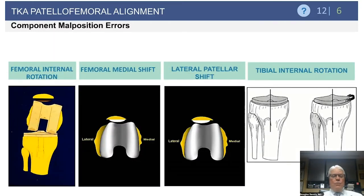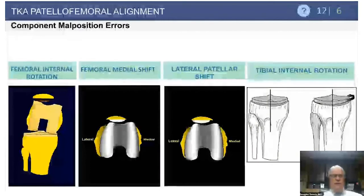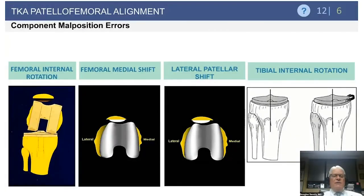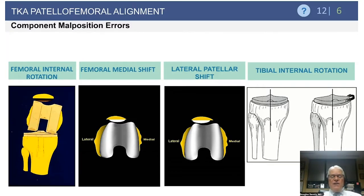To go through each of these in more detail: if you internally rotate the femoral component, you are essentially taking the trochlea further medial, making patellofemoral capture more difficult. If you medialize the femoral component, the same thing happens — you're bringing the trochlear groove medial away from where the patella wants to track. If you laterally shift the patella, you are essentially moving it away from the trochlea.